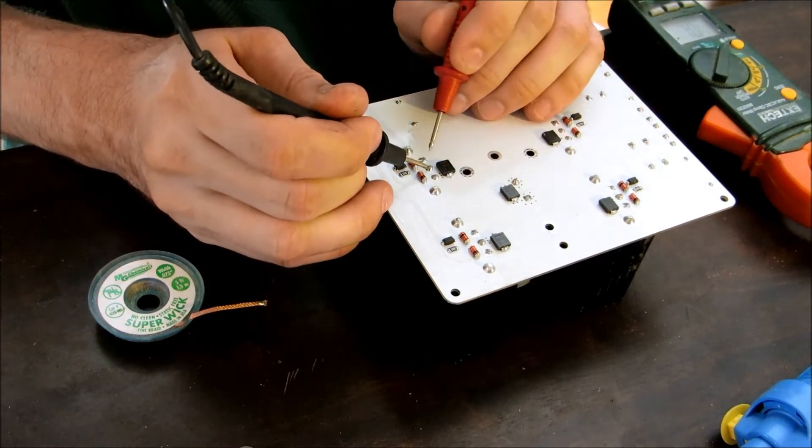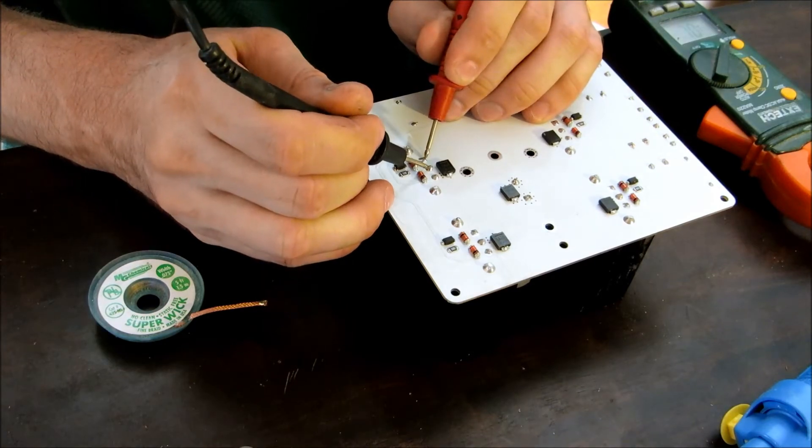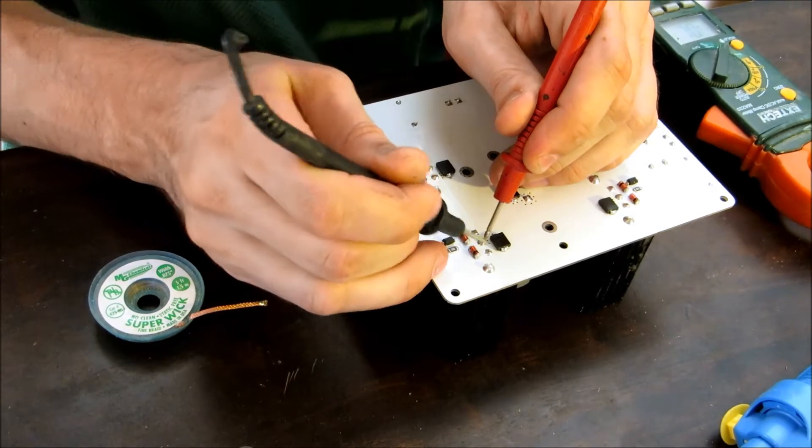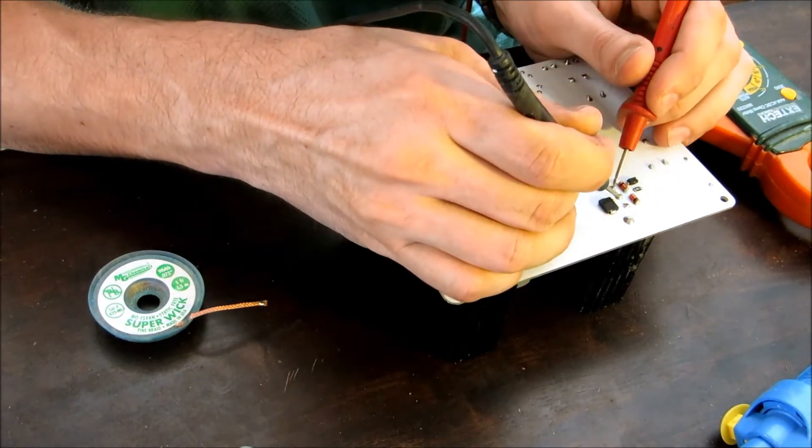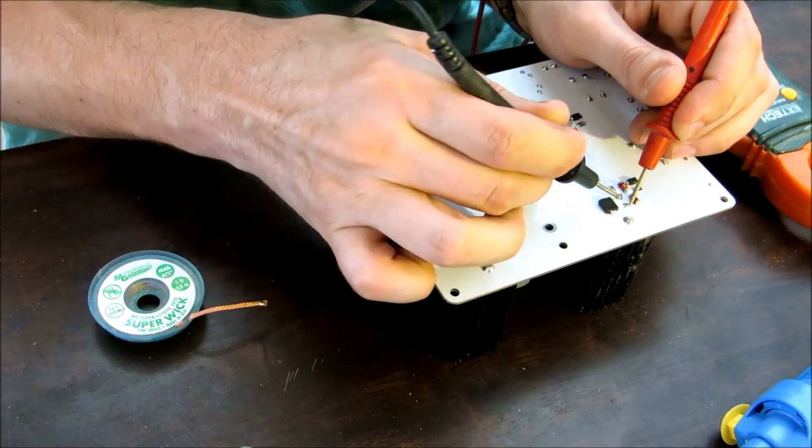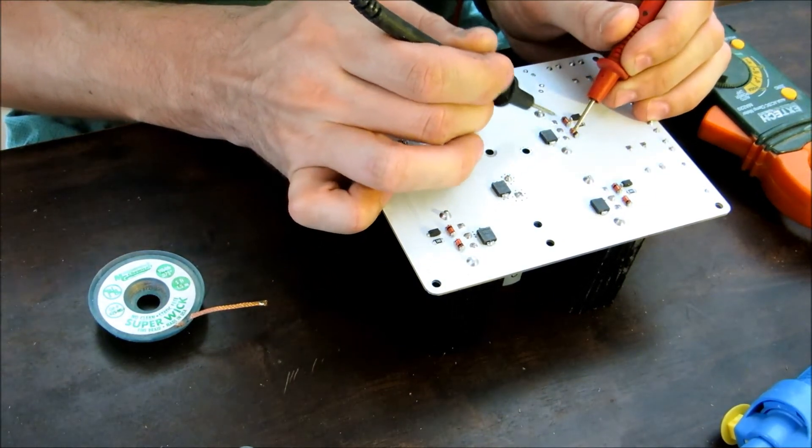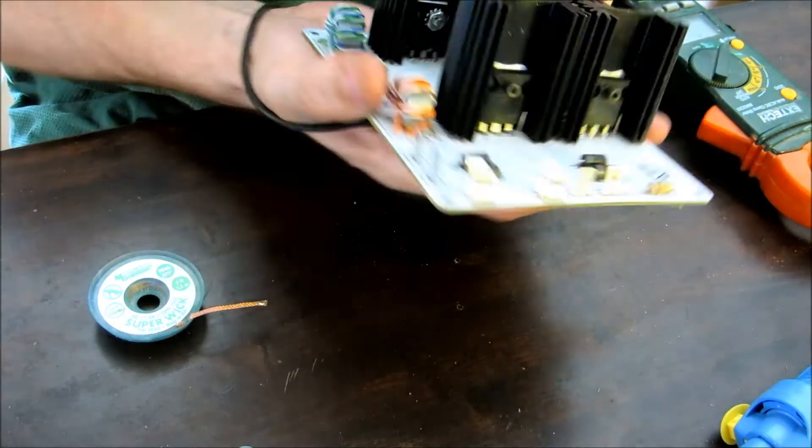So you want to do like a middle pin to an outer pin on each one. It's usually only going to be one side. Yep, so you got this side here. Just middle pin to outer pin. These two pins are always going to be shorter, the two outer, because of the transformer you got right here.